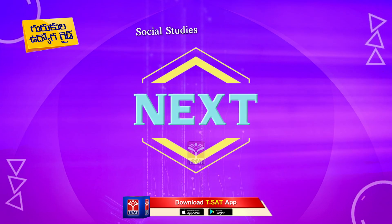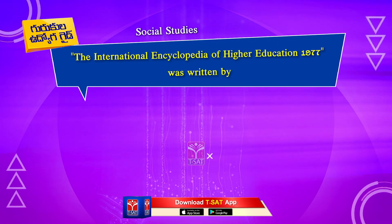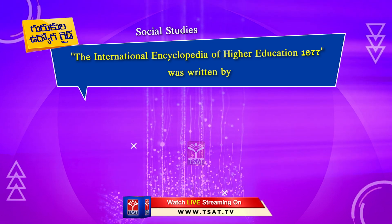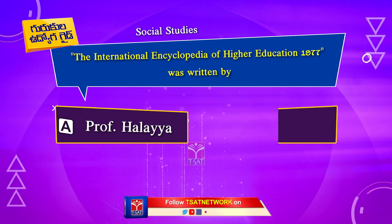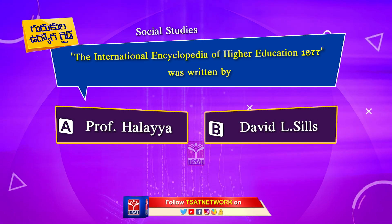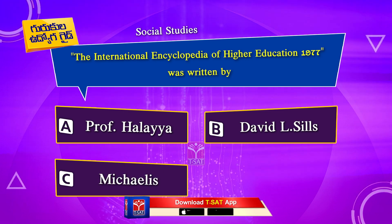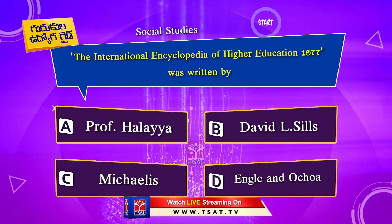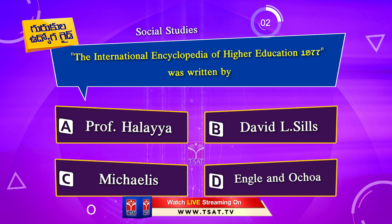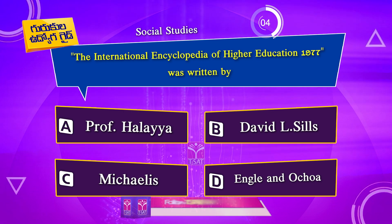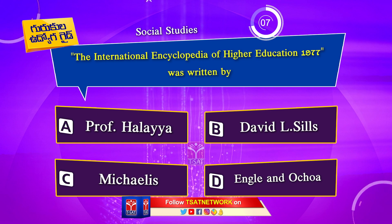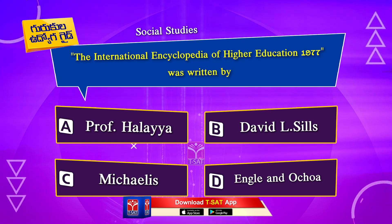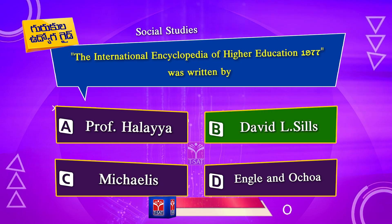Next Question. The International Encyclopedia of Higher Education 1977 was written by: Option A. Professor Halaiya. Option B. David Elsels. Option C. Michaelis. Option D. Engli and Okova. The correct answer is Option D. David Elsels.